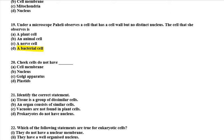Twentieth question: cheek cells do not have which of the following — cell membrane, nucleus, Golgi apparatus, or plastids? The answer is plastids, because plastids are present in plant cells only. Cheek cells are animal cells, so they do not have plastids.